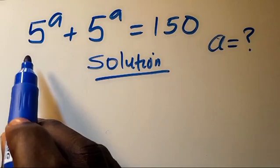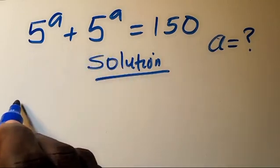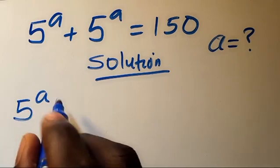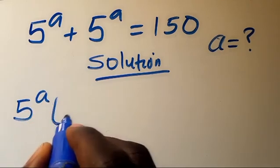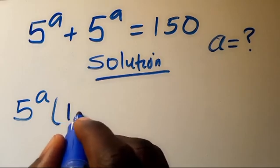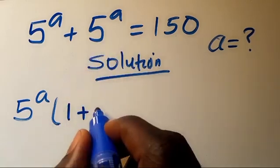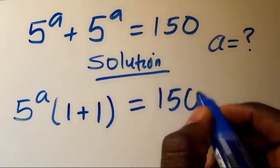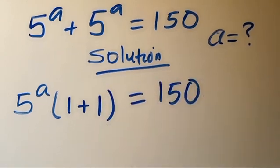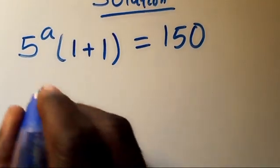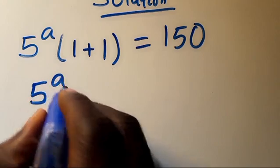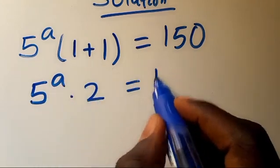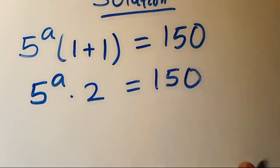From here we have 5 to the power of a in common, so we can factor it out. Opening the parentheses, 5 to the power of a divided by itself gives us 1, plus 5 to the power of a divided by itself gives us 1, equals 150. So we have 5 to the power of a times 1 plus 1, which gives us 2, equals 150.